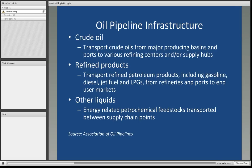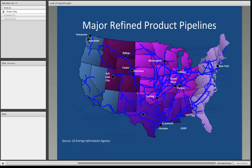The oil pipeline infrastructure transports crude oil from major producing basins and ports to various refining centers and supply hubs. Refined products — including gasoline, diesel, jet fuel, and liquefied petroleum gases, or LPGs — are transported mostly by pipeline from the refineries and ports to end-user markets. Other energy-related petrochemical feedstocks are also transported between the major supply chain points.